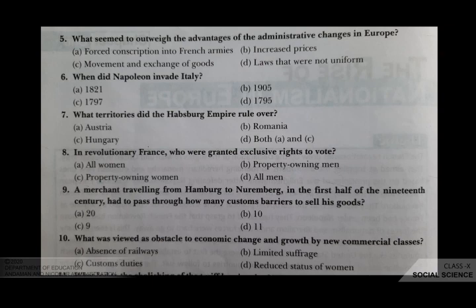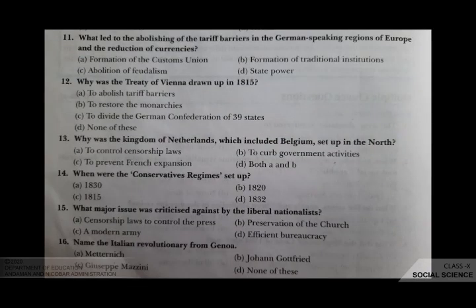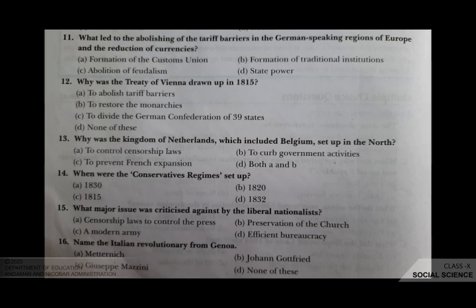The next question: what led to the abolishing of the tariff barriers in the German-speaking regions of Europe and the reduction of currencies? Your options are A formation of the customs union, B formation of traditional institutions, C abolition of feudalism, D state power. The correct answer is A, formation of the customs union.